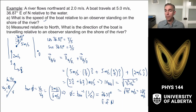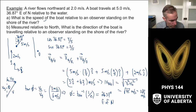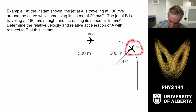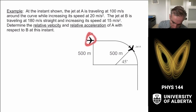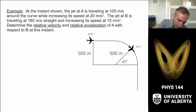That gives us an example of how to figure out these velocity components using the relative motion expression. Now, the final problem: at a given instant, jet A is traveling at 100 meters per second around a curve, increasing its speed at 20 meters per second squared. Jet B is traveling at 180 meters per second straight, increasing at 15 meters per second squared. We want to determine the relative velocity and relative acceleration of A with respect to B at this instant.